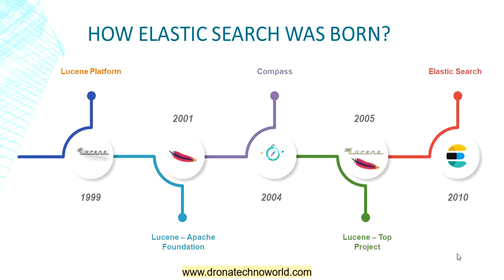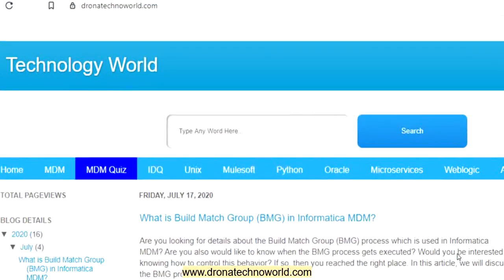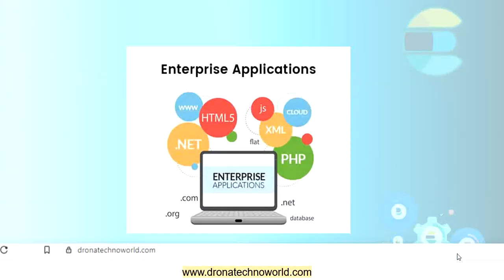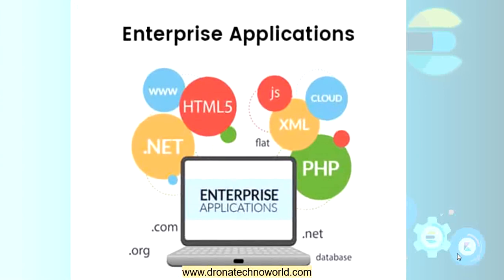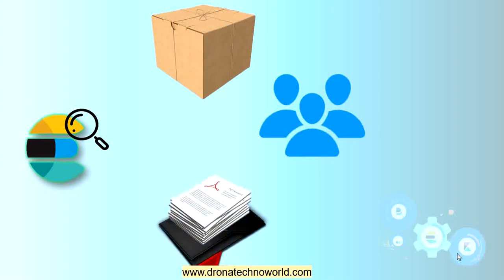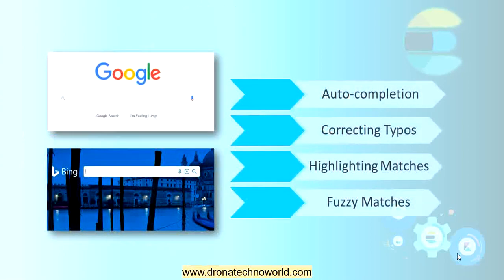Now we know the history of Elasticsearch. Let's dive a little deeper. Elasticsearch is most commonly used to add search functionality. This functionality can be added to a simple blog or a complex enterprise application. Users can search for data such as a product, person, or any kind of document. We can build complex search functionality similar to Google or Bing, which includes features such as auto-completion, correcting typos, highlighting matches, and even performing fuzzy matching.